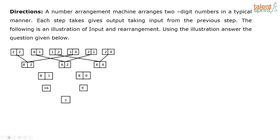A number arrangement machine arranges two-digit numbers in a typical manner. Each step gives output taking from the input of the previous step. The following is an illustration of the input and rearrangement. Using the illustration, answer the question below. This is the basic operation that is happening — a particular input is given, and these are the different steps followed to arrive at the final output. You have to decode what is happening in each step. The key to solving questions on machine input-output in the latest pattern is this.